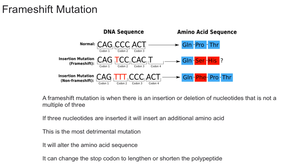However, if you add a T in this spot, you're going to create a different set of proteins. The normal protein is shown here, but if you add this T, it's eventually going to create a serine and a histidine, which differs from the normal proline and threonine. It's important to keep in mind that a frameshift mutation is going to change essentially every amino acid after the mutation.